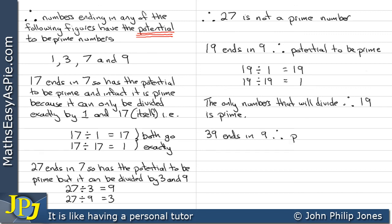39 ends in 9, therefore potential to be prime. But we can see we can divide it by 13 and 3. Therefore, 39 is not a prime number.